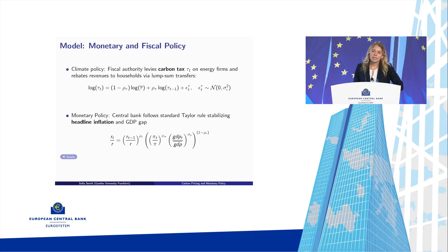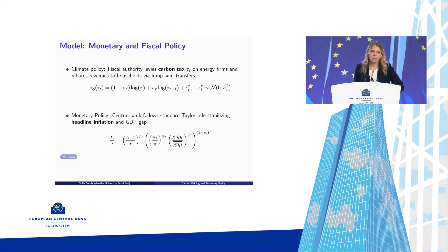On the policy side, the government levies a carbon tax on fossil energy firms, and this carbon tax is modeled as an AR(1) process since I'm interested in the effects of carbon price shocks. The Taylor rule — the central bank rule — in the baseline version focuses on stabilizing headline inflation and GDP.